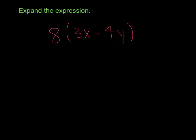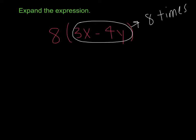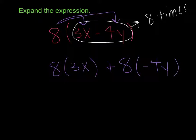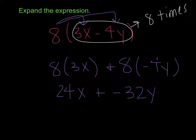Example number 2 is 8 times parentheses 3x minus 4y. That means you're going to do this term 8 times. So I can say 8 times 3x, and then I can say 8 times negative 4y. 8 times 3 is 24, so that's 24x. And 8 times negative 4 is negative 32y. Since adding a negative is the same as subtracting a positive, I could also write this as 24x minus 32y.